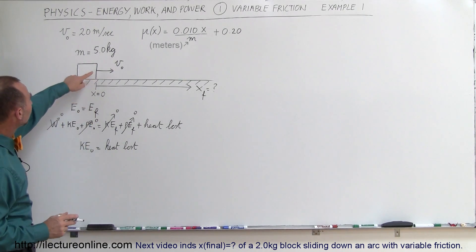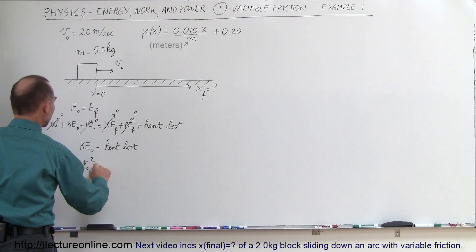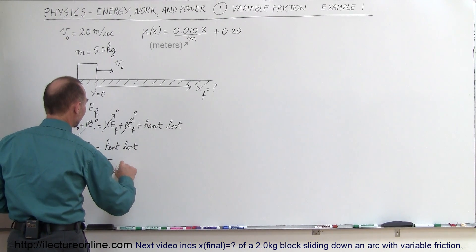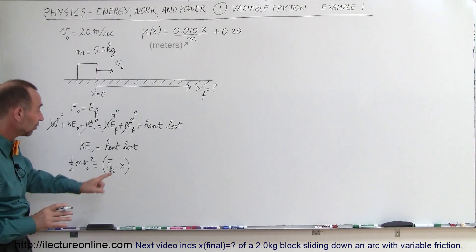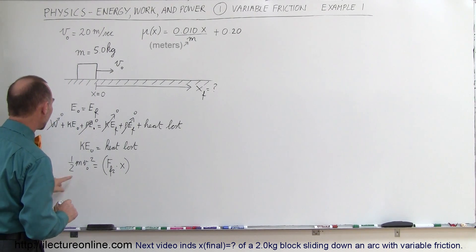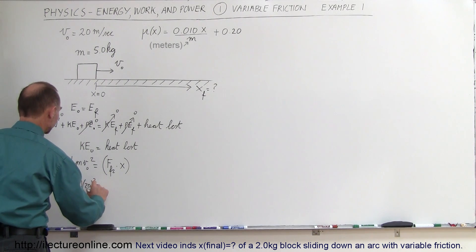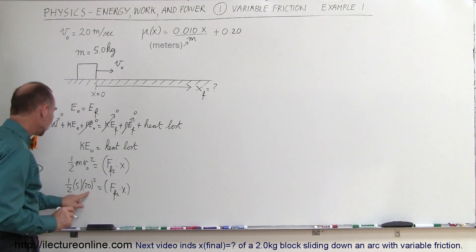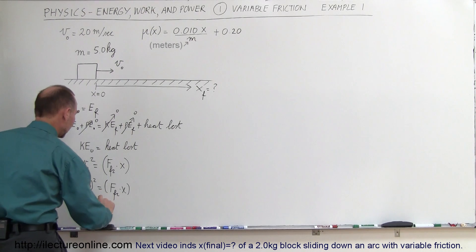The initial kinetic energy is one half times the mass times the initial velocity squared, which equals the heat lost. We plug in numbers: one half times 5 kilograms times 20 squared. That's 400 divided by 2, which is 200, times 5 — that gives us 1000 joules equal to the heat lost by friction. We put this in parentheses because the force caused by friction is not constant; the coefficient of friction varies, so we'll have to handle that separately.